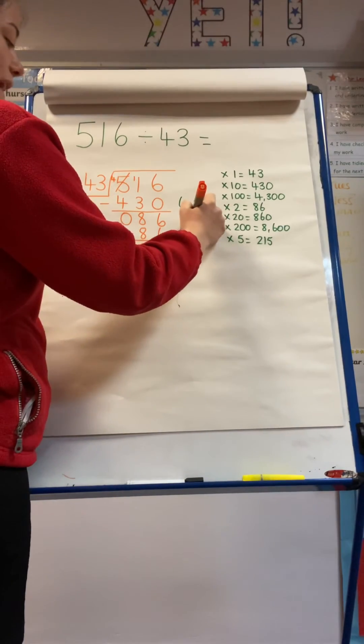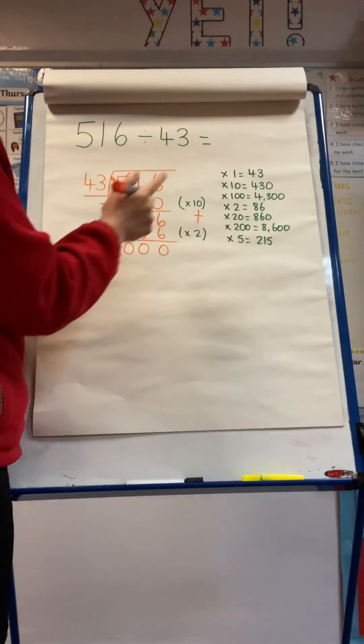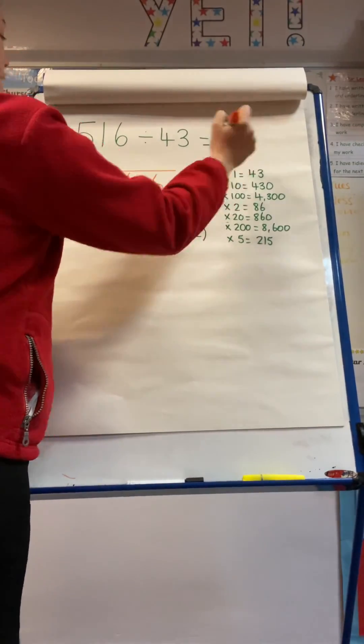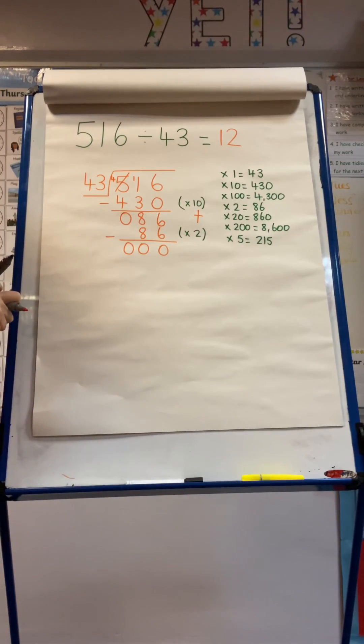I'm then going to add these two numbers together. So 10 add 2 makes 12. So I know that 516 divided by 43 is 12.